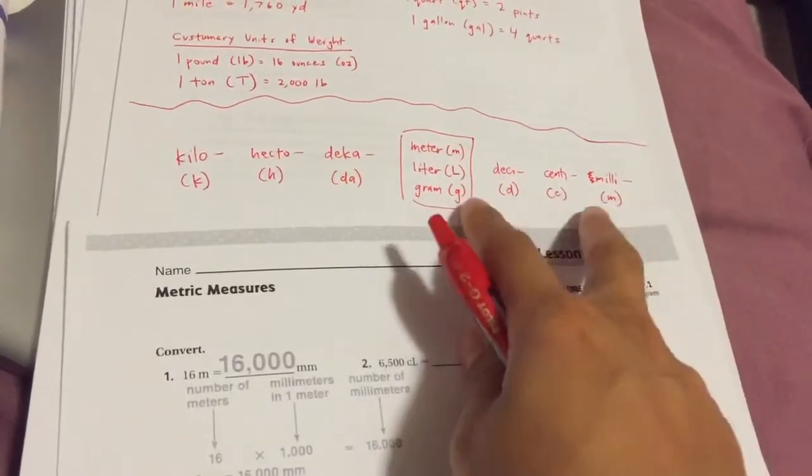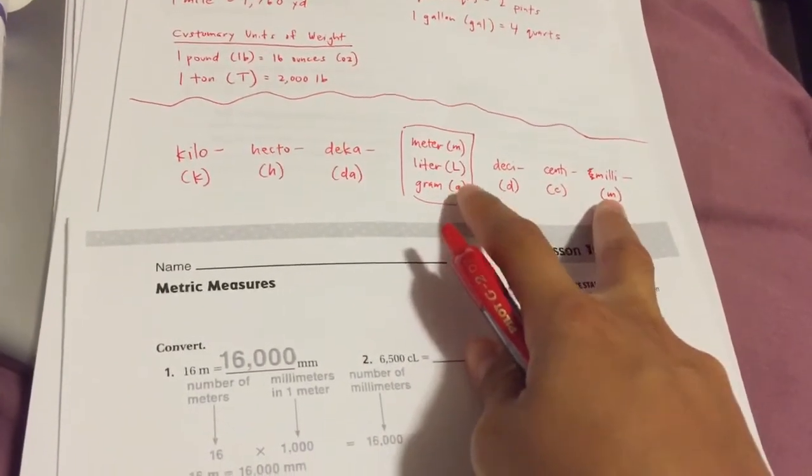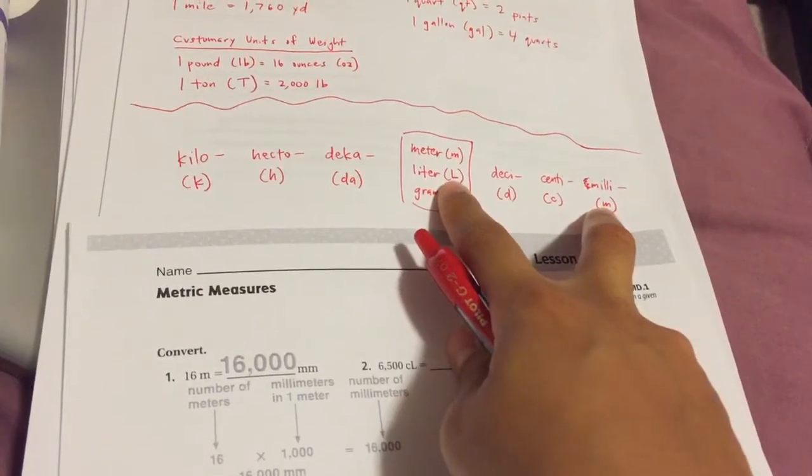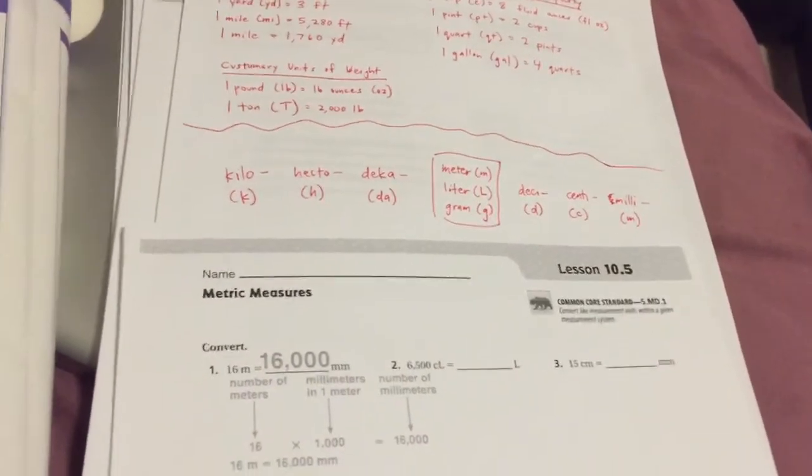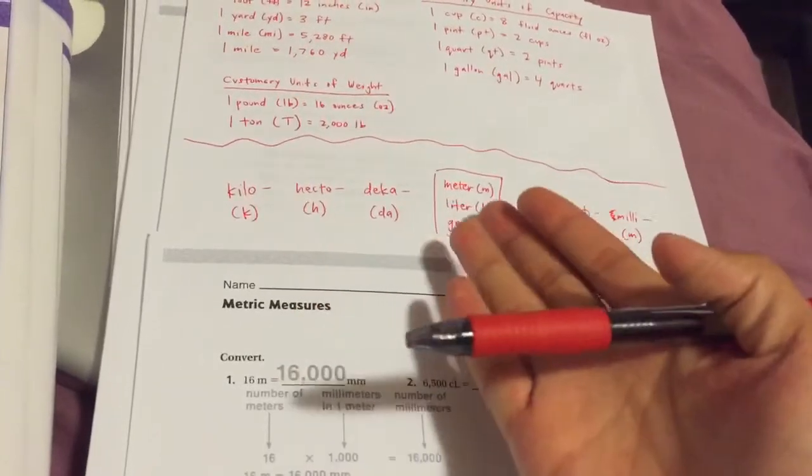It will only be milli if it's followed by a G, like milligram, or followed by an L, milliliter. That being said, that's kind of how to read this chart.